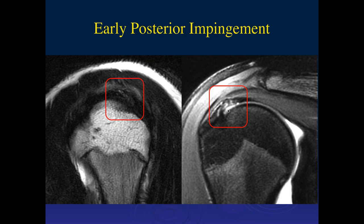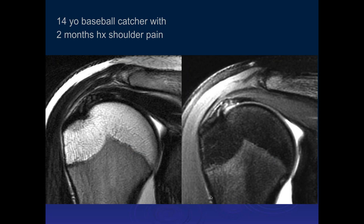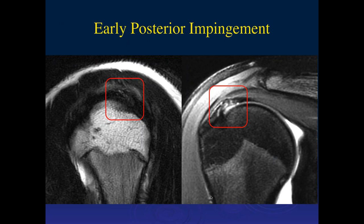The tear of the rotator cuff is thought to be an overuse injury with chronic repetitive traction injury. The bone injuries here are due to the fact that in the late cocking phase you get an impaction between the posterior superior aspect of the humeral head and the posterior superior aspect of the glenoid. That's what produces this bone injury, the posterior superior labral tears, and this condition from repetitive overuse. This is typical of posterior impingement and it's often associated with the GIRD syndrome.